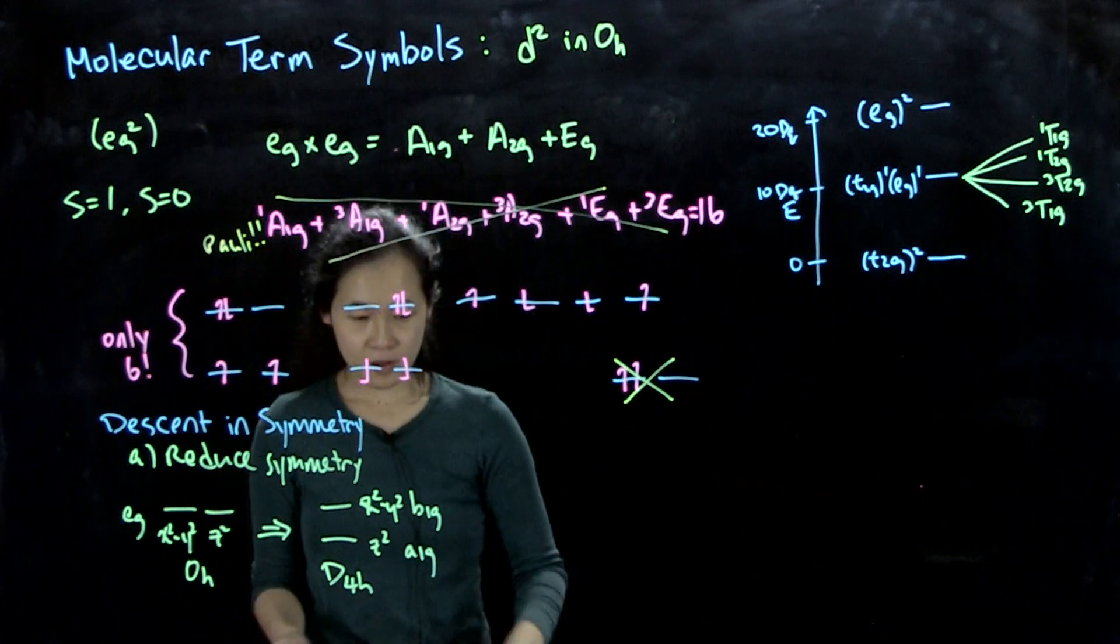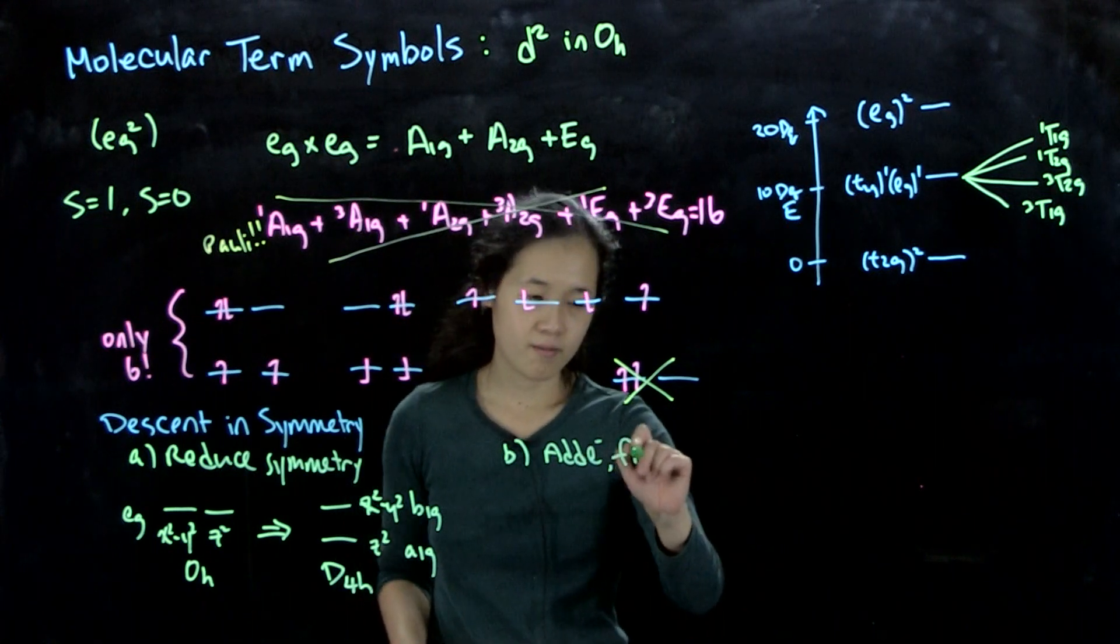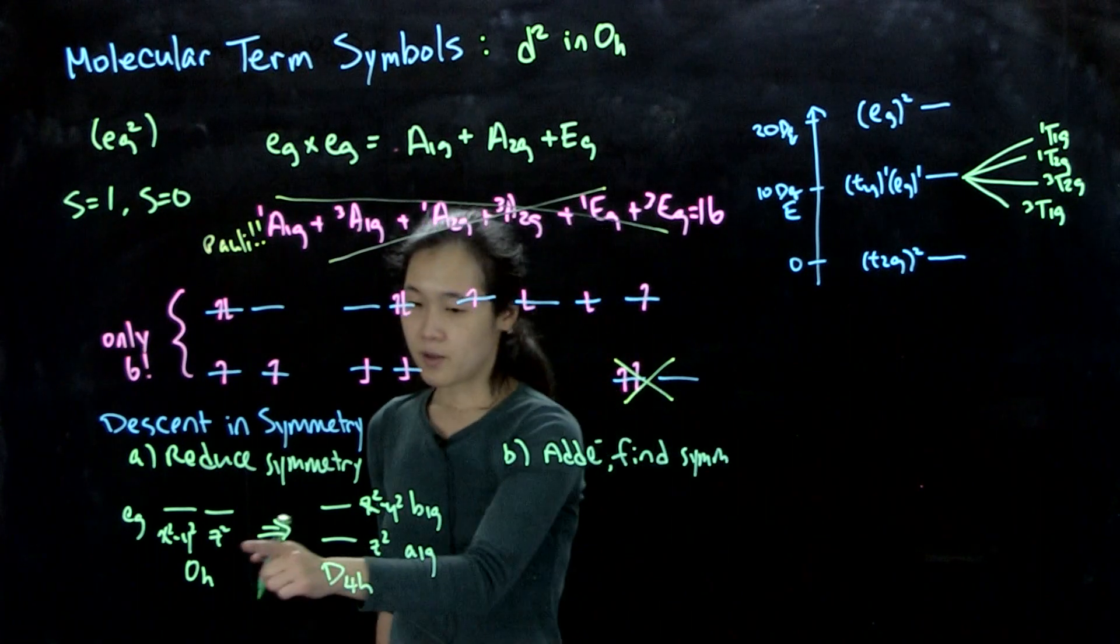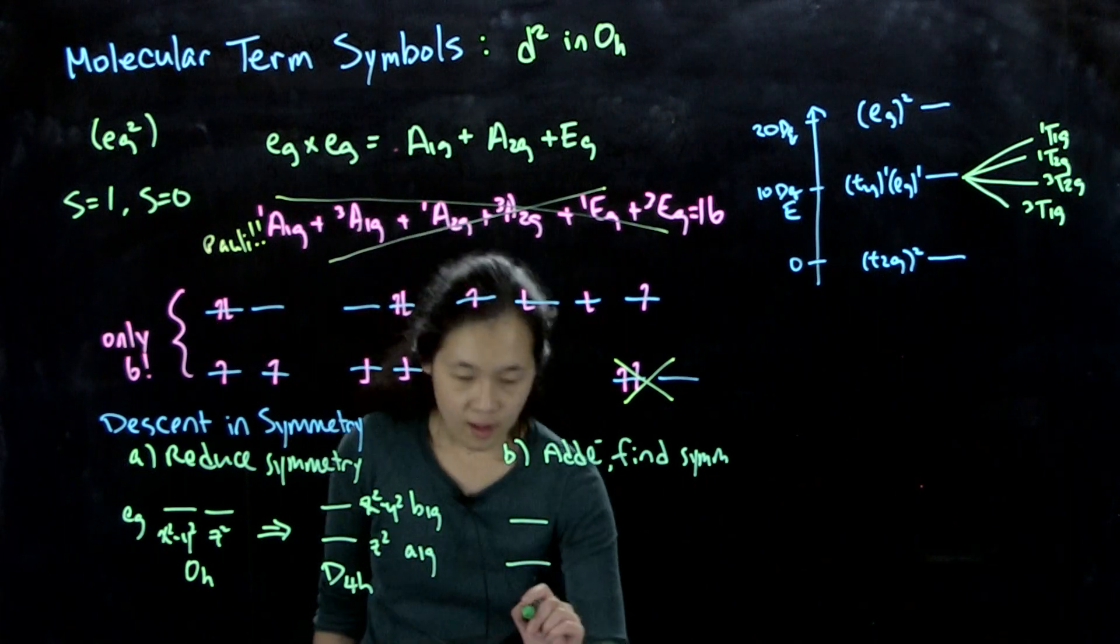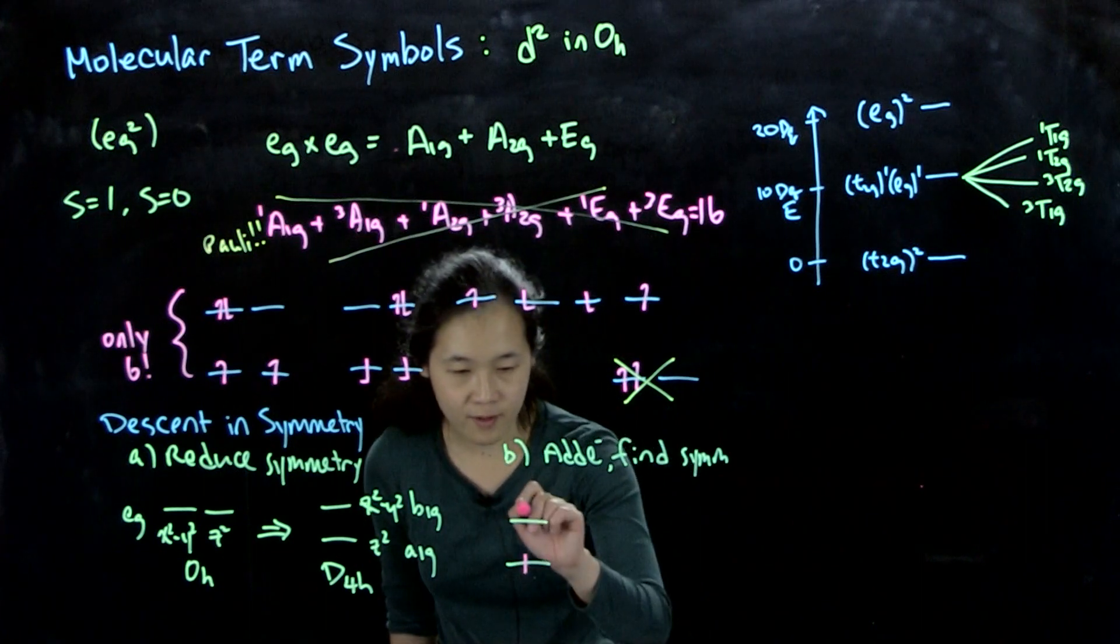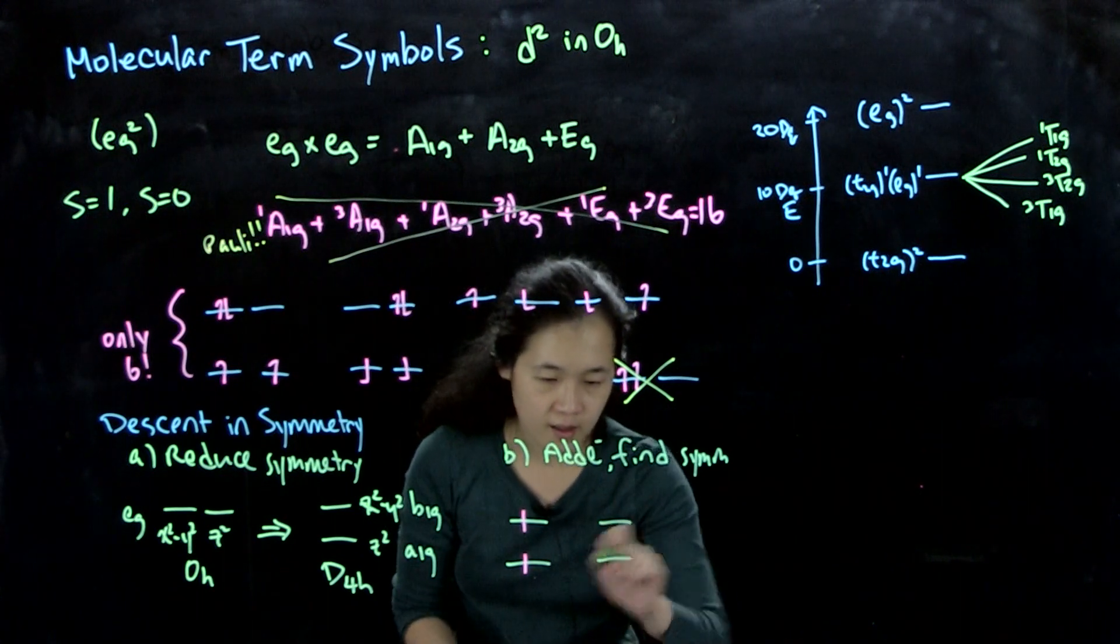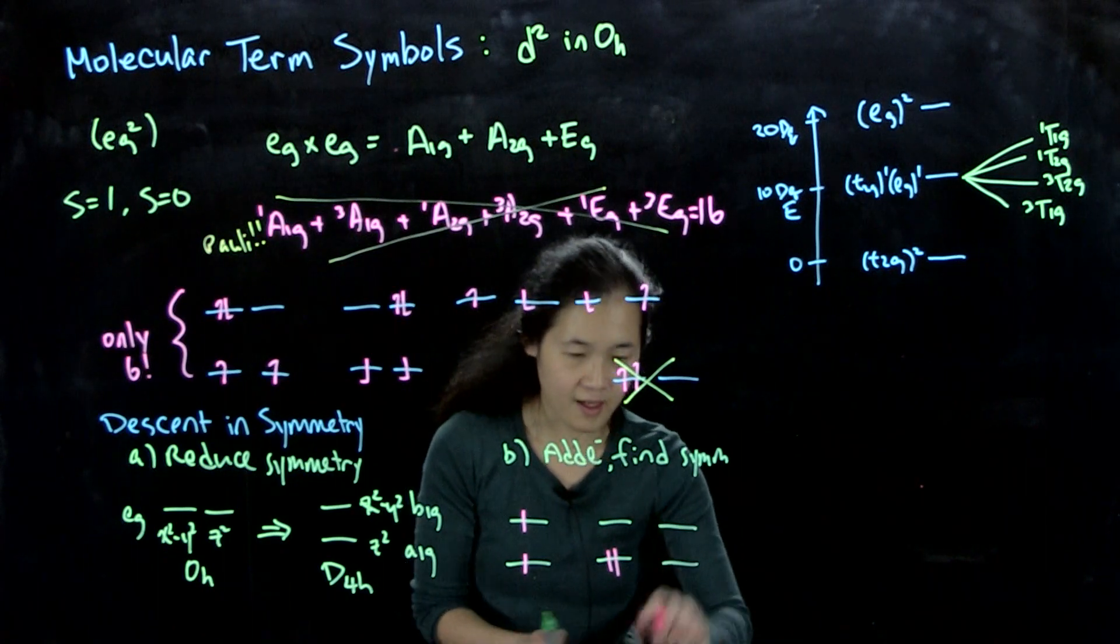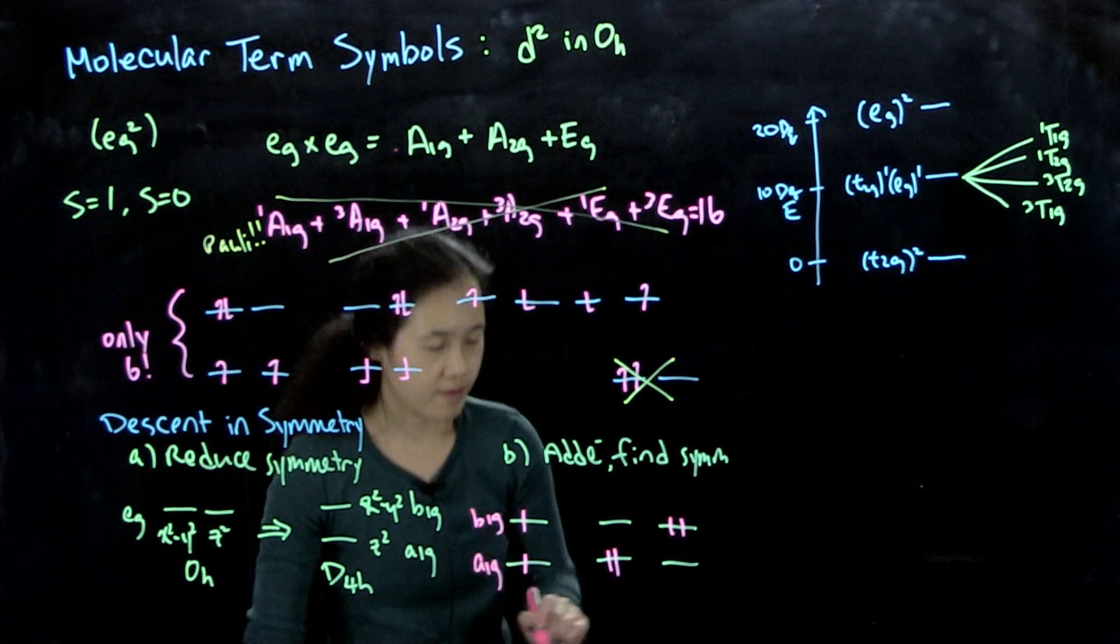So then now step two is add electrons, find symmetry. Okay, so for this, in this d4h, we can have, if we start thinking about our two electrons, having two electrons, I'm not going to draw a spin. We could have electrons like this, we could have electrons like this, and we could have electrons like this. And I'm going to label my orbitals, don't worry. All right, this was our b1g, a1g, et cetera, et cetera.